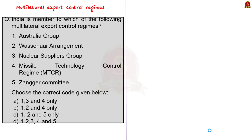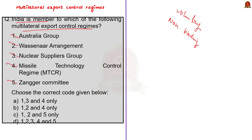Multilateral export control regimes. Let's understand this topic through a question: India is a member to which of the following multilateral export control regimes — Australian group, Wassenaar agreement, nuclear supplier group, missile technology control regime, Zanger committee. First of all, know that multilateral export control regimes are voluntary and non-binding agreements of the major nuclear fuel or material supplier countries, aiming to prevent the proliferation of weapons of mass destruction and their delivery means and related equipment technology.